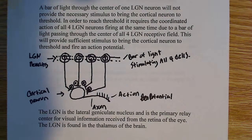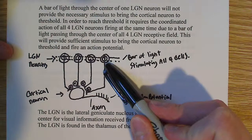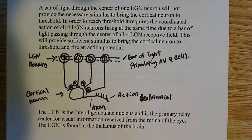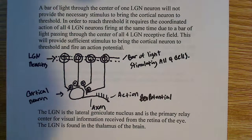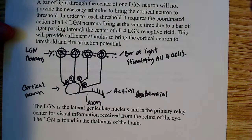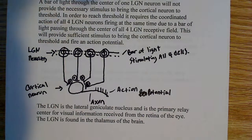So that's going to fire an action potential. The light through the center of only one LGN neuron will not provide enough stimulus — just one bar of light through one of these LGN neurons is not going to provide the necessary stimulus to bring this cortical neuron to threshold. So in order to reach threshold, I have to have the coordinated firing of all four LGN neurons. All four have to fire at the same time in a coordinated process, all brought to threshold simultaneously, to create enough change in membrane potential to fire this action potential. Once that happens, you'll get the necessary response — sufficient stimulus to bring the cortical neuron to threshold and fire an action potential.